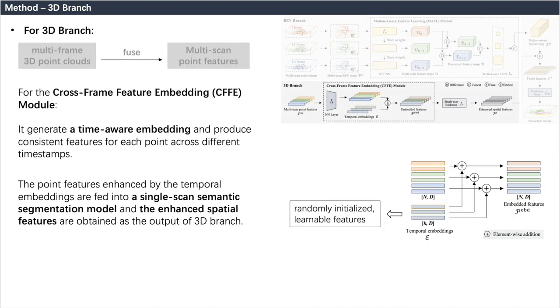As for the proposed 3D branch, the cross-frame feature embedding module generates a time-aware embedding and produces consistent features for each point across different timestamps. First, we randomly initialize a set of learnable temporal embeddings and augment each feature in the fused point cloud with element-wise addition based on the time related to the different frames.